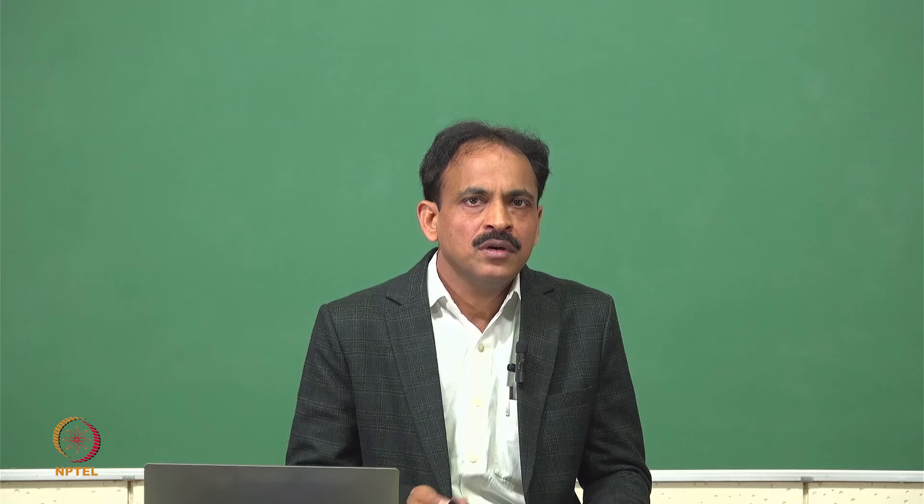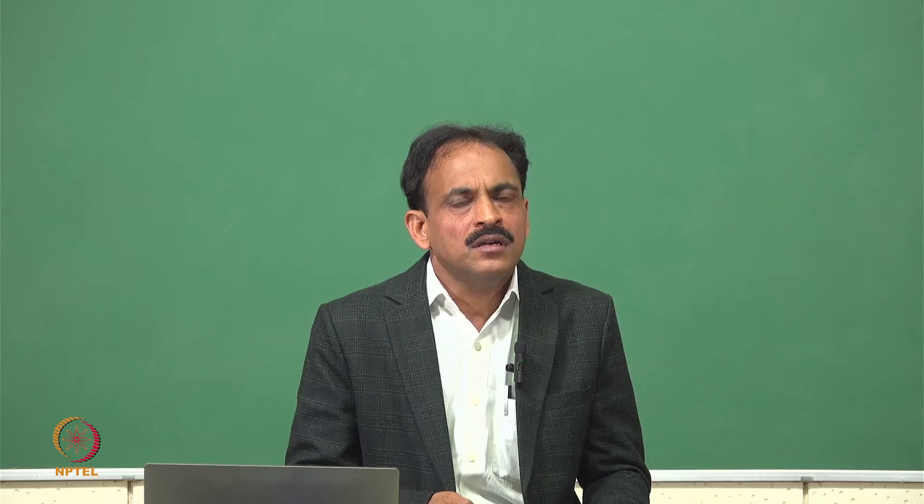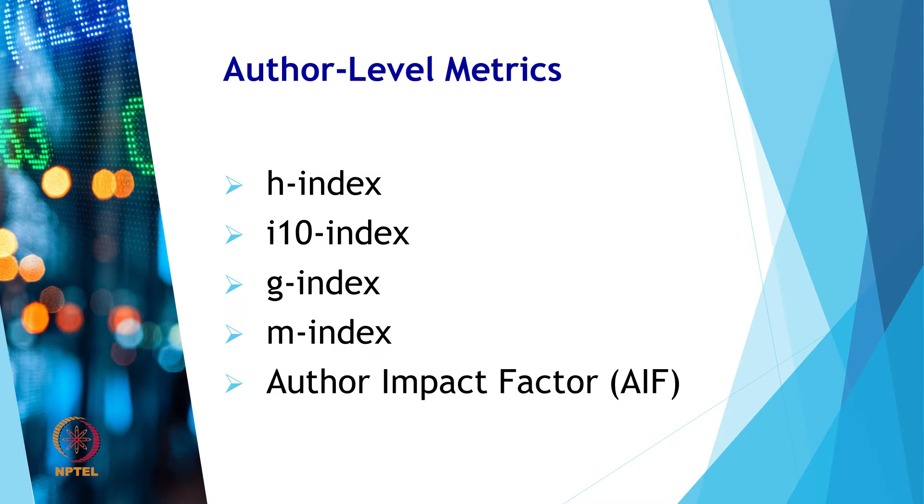Author-level metrics provide an assessment of the impact that an author makes on the scientific community or field of study. They are used to track how often an author's work is cited, to demonstrate the reach and impact of an author's work, and to track the work of colleagues and identify potential collaborators. There are a number of author-level metrics which include H index, I-10 index, G index, M index, author impact factor, and so on.